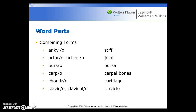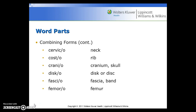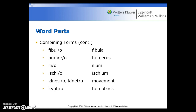Combining forms important in this system are: ankylo for stiff; arthro or articulo for joint; bursa for bursa; carpo for carpal bones; chondro for cartilage; clavico or claviculo for clavicle; cervico for neck; costo for rib; cranio for cranium or skull; disco for disc; fascio for fascia or band; femoro for femur; fibulo for fibula; humero for humerus; ilio for ilium; ischio for ischium; kinesio or kineto for movement.